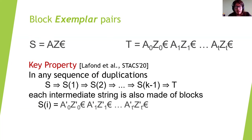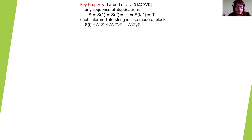This key property, as shown in LaFond, is that in any sequence of duplications which goes from S to S1, S2, ..., S_{k-1}, T, each intermediate string is also made of blocks. So each S1, S2, Si also has a structure of the type A0', Z0', EUR, A1', Z1', EUR, and so on. Let's keep this important property in mind.